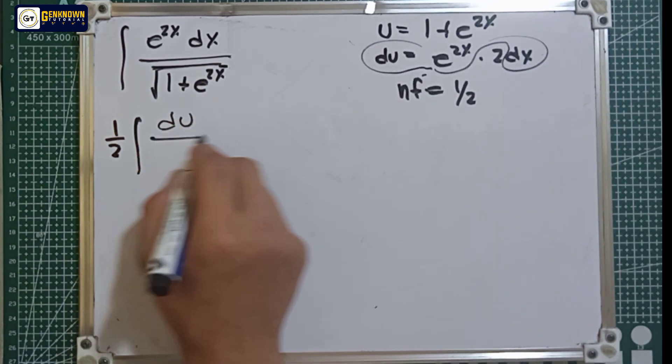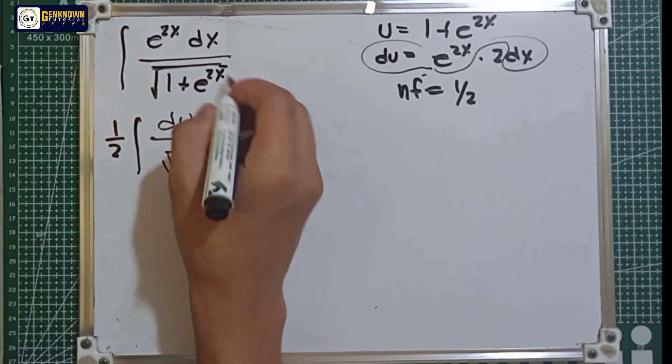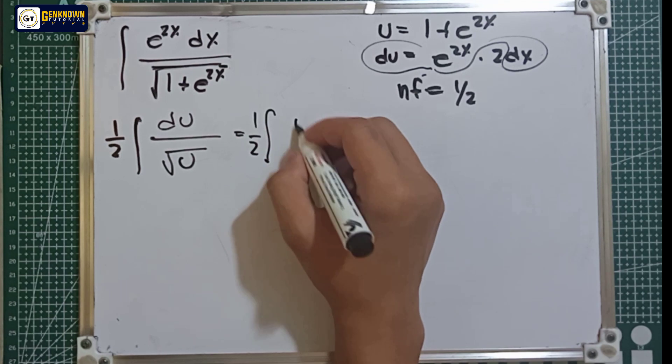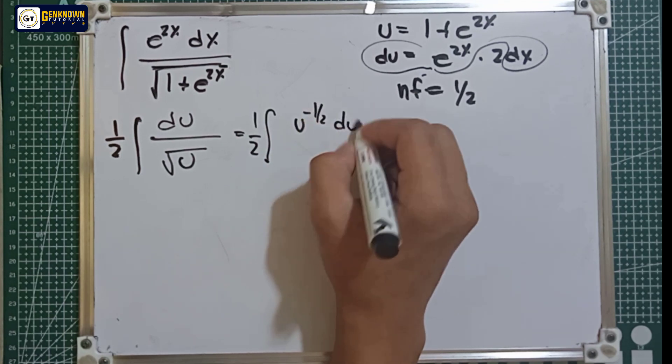du over the square root of u equal to 1 over 2 u raised to negative 1 over 2 du.